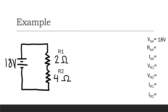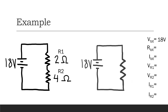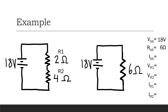We can redraw this circuit as a series circuit with just one resistor. To find the total resistance, remember R total equals R1 plus R2. In this case, that's 2 ohms plus 4 ohms, which gives us a total of 6 ohms. We can write that on our diagram and in our list of quantities.